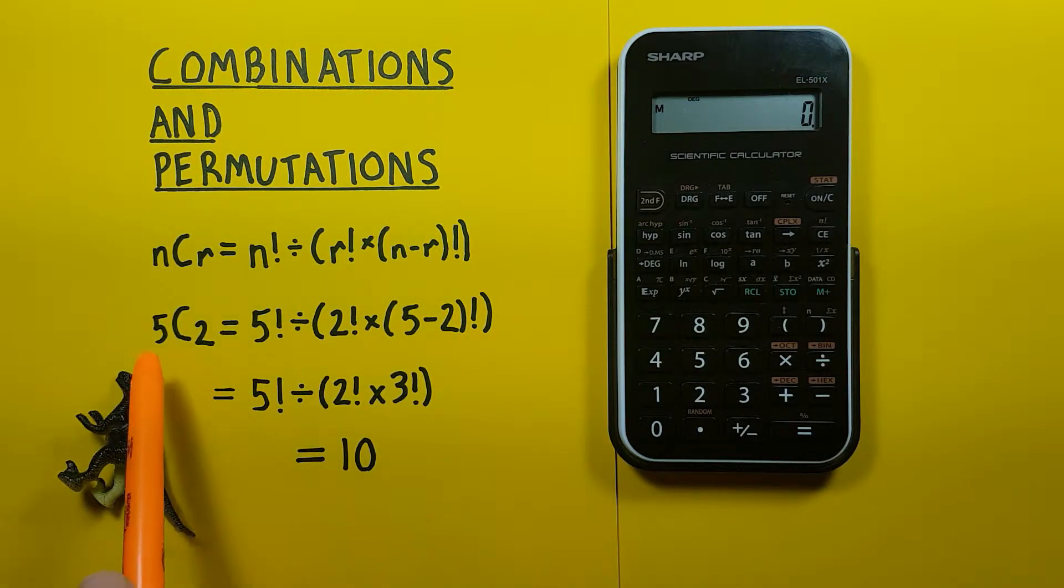So for our example for combinations, let's say we have 5 and want to choose 2 and we want to see how many possible combinations there are.